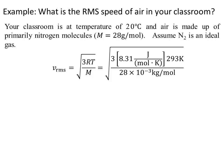then we can write down that the RMS is equal to the square root of 3 times R times T over M. Plugging in the values for the gas constant and the temperature and the molar mass, we get that. And solving it, we find that the RMS is equal to 511 meters per second, which is rather fast.